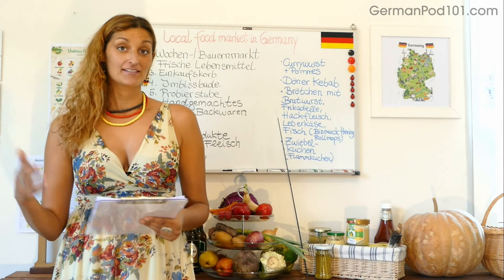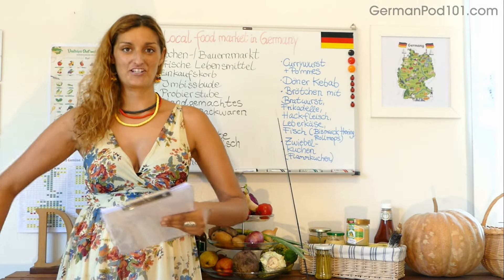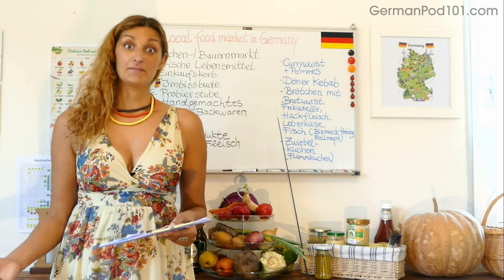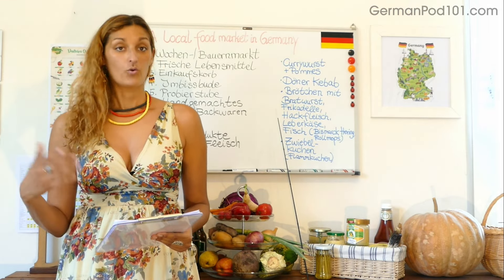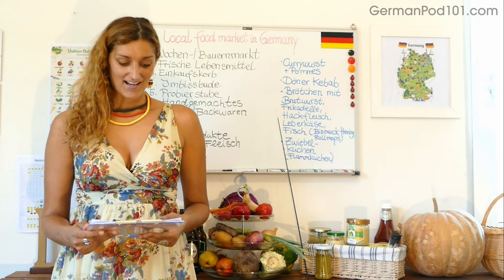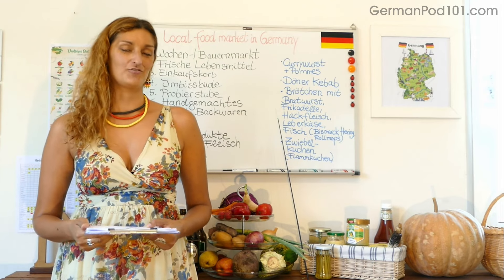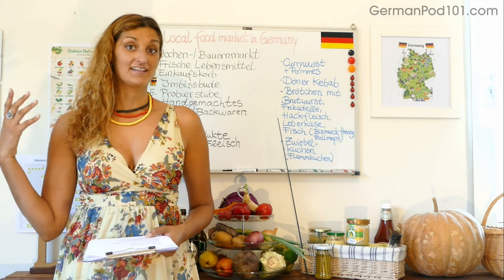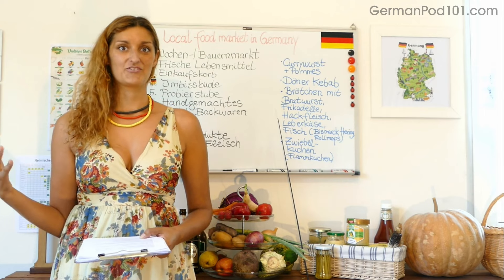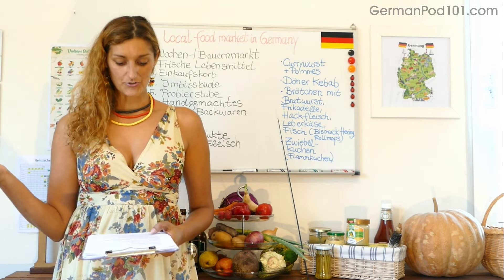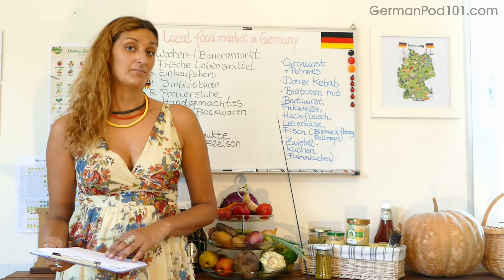Und das Thema unseres Unterrichts heute ist, einen deutschen Lebensmittelmarkt zu besuchen. Ich beschreibe euch deutsche Lebensmittel, Gerüche, Geräusche und vielleicht auch Sehenswürdigkeiten, die ihr auf einem deutschen Lebensmittelmarkt entdecken könnt. Das Thema bietet euch reichhaltige Vokabeln rund um das Thema deutsches Essen, Einkaufen und deren Beschreibung. Deutschland überrascht seine Besucher mit einer großen Vielzahl an deutschen Wochen- und Bauernmärkten, die immer eine interessante Atmosphäre haben mit Livemusik, Jazzmusik oder verschiedener Musik. Wenn ihr vorhabt, auch mal nach Deutschland zu reisen, dann müsst ihr unbedingt auch einen deutschen Lebensmittelmarkt besuchen.